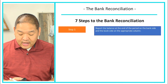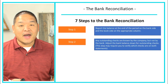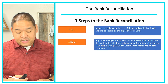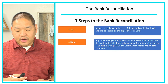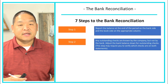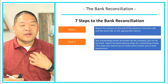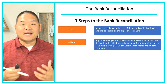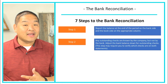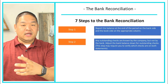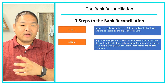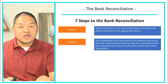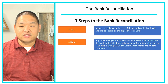Step number two: any outstanding checks are known by the company. When a company writes a check, they know the check has been written, but not the bank. We adjust the bank balance down for any outstanding checks. For example, if we wrote a check for $1,000, we've already taken that off our general ledger balance. But if that check hasn't been cashed or hasn't cleared our bank account, our bank account is going to show $1,000 more than it should. So in the bank reconciliation, we remove that $1,000 from the bank's ending total balance to get it to what it should be, should that check have actually cleared during the month.